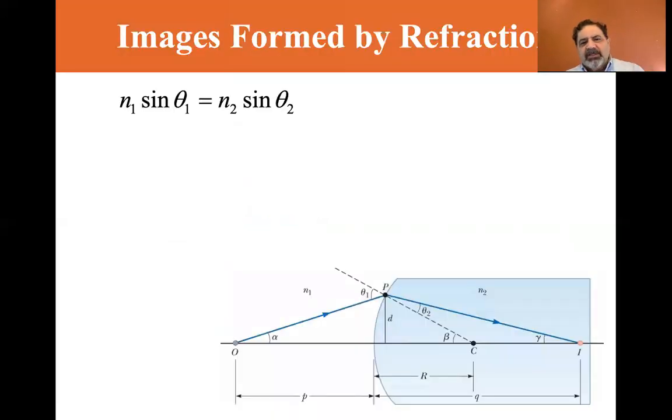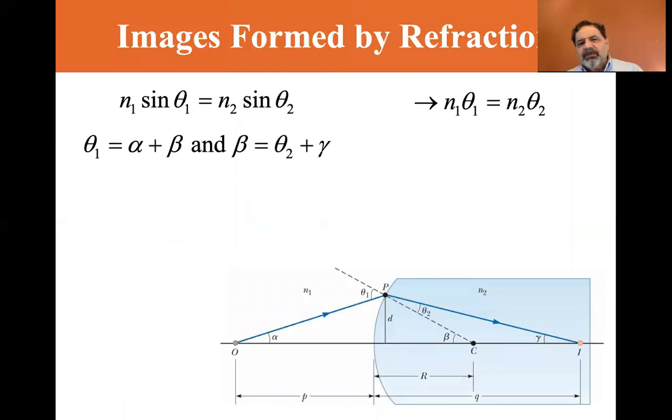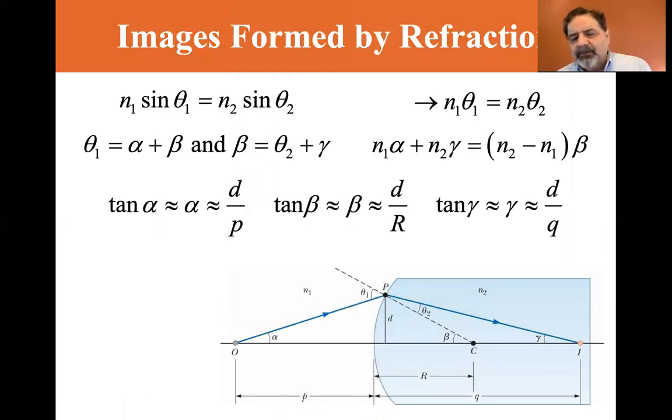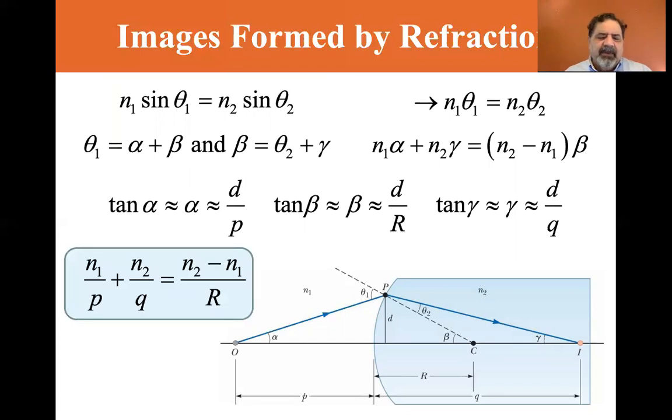So we continue on and I'll just, you know, they use some geometric similarities. And but the bottom line is, this is the equation that they use: N1 over P, the object distance, plus N2 over Q, the image distance, equals N2. The difference of the indices of refraction, N2 minus N1, over the radius. And the magnification is equal to minus N1 Q over N2 P.